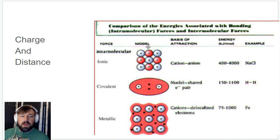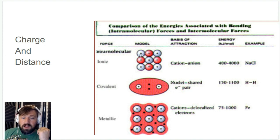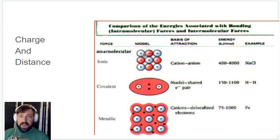For ionic bonds, we have a cation and an anion — a full positive charge and a full negative charge. The charge difference between these is quite high. Going back to Coulomb's Law, the attractive force is going to be pretty high. On top of that, in the lattice structure, these ions are extremely close together. So we have high charge difference and small distance, meaning the bond energy is going to be pretty high — and sure enough, it's the highest of the three bond types.